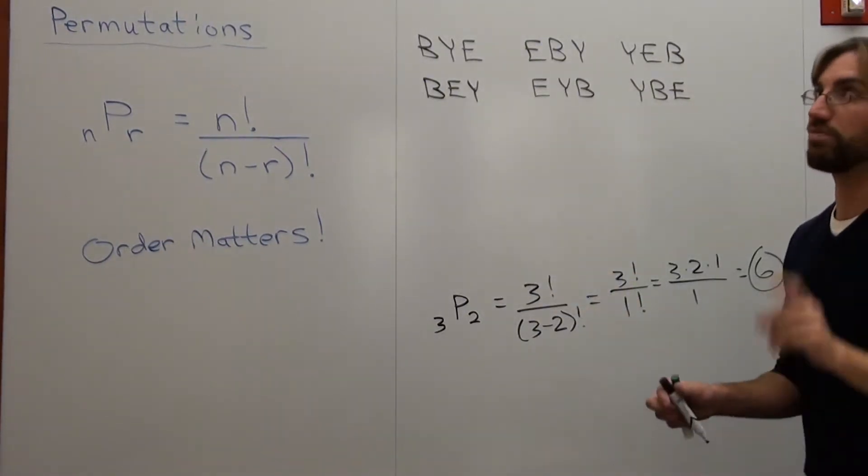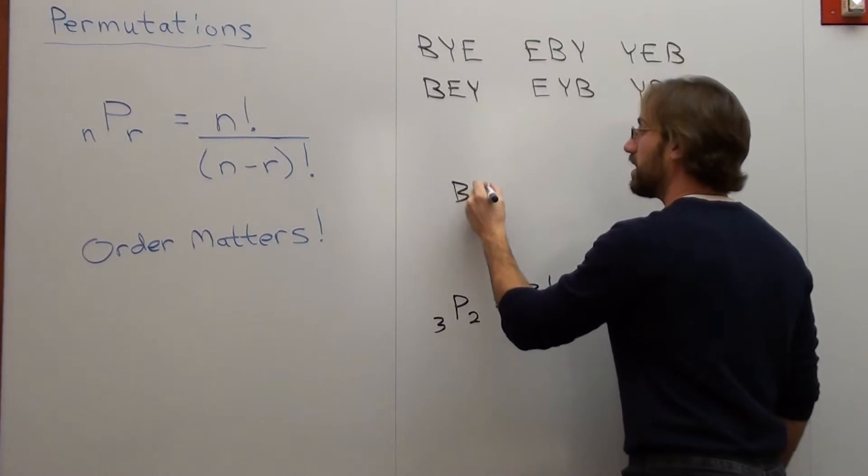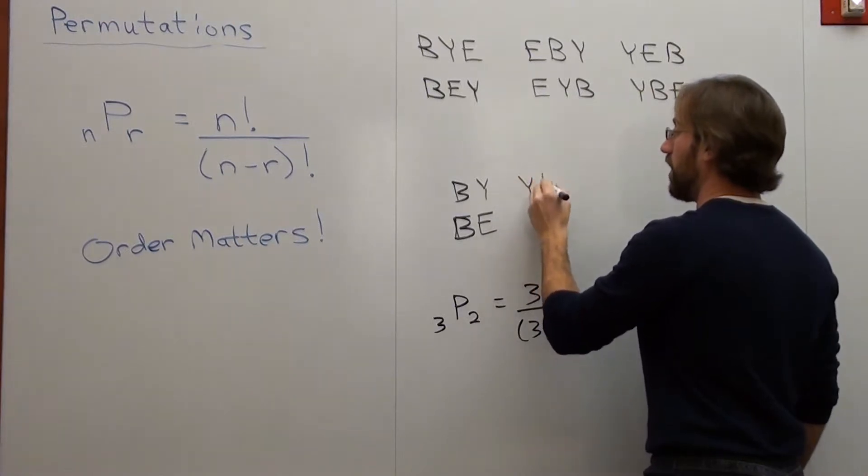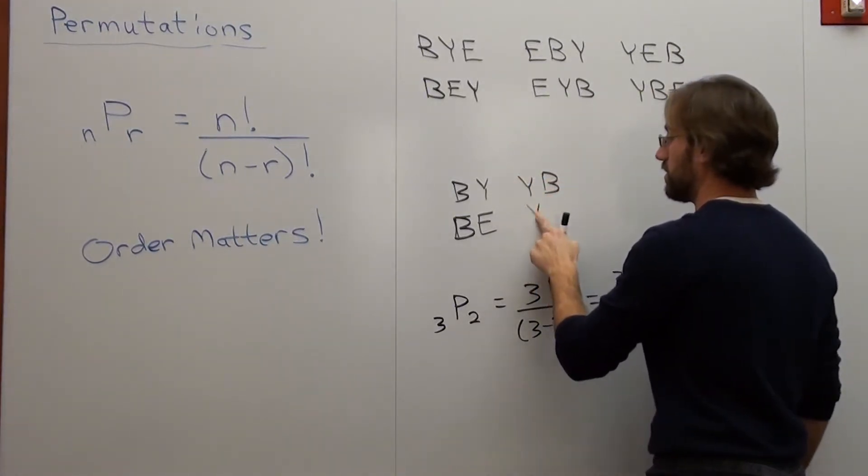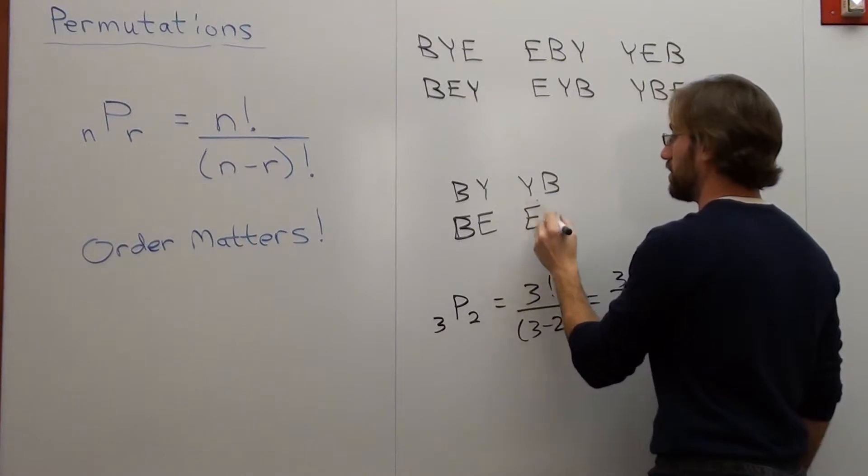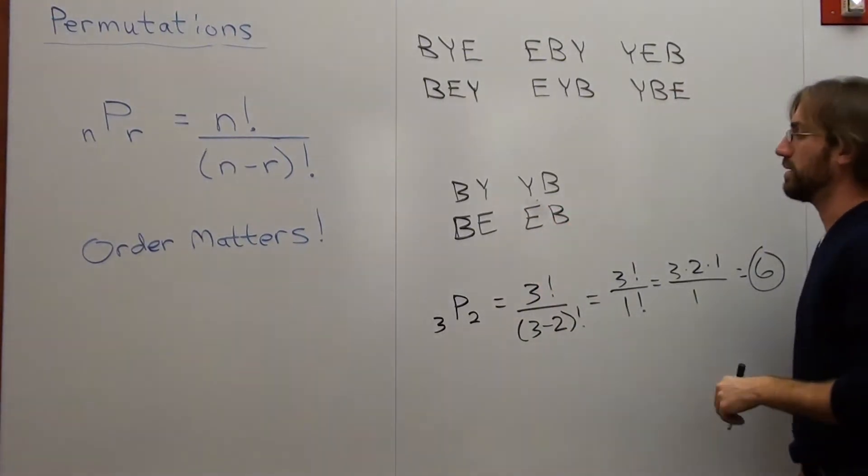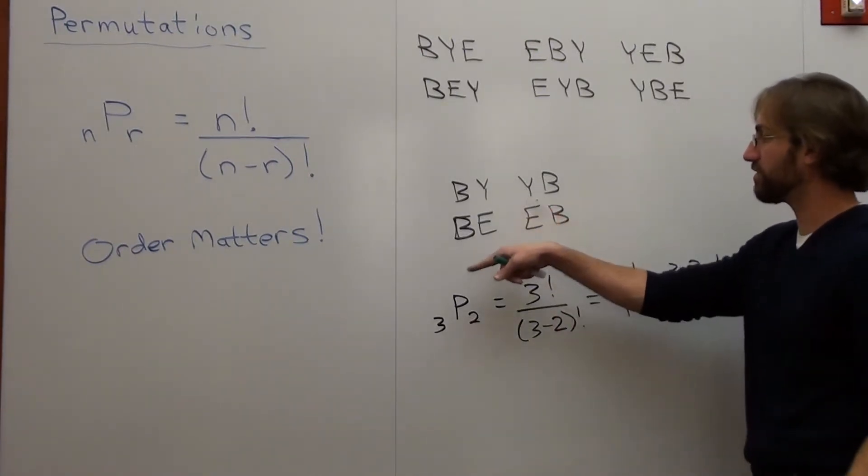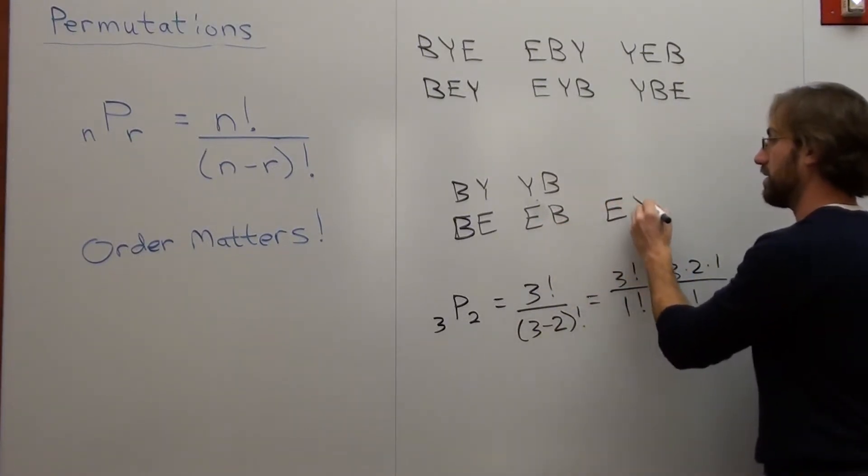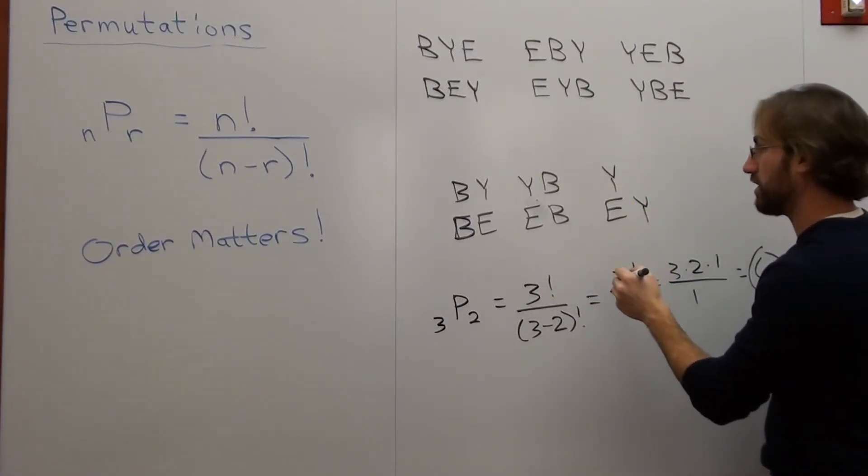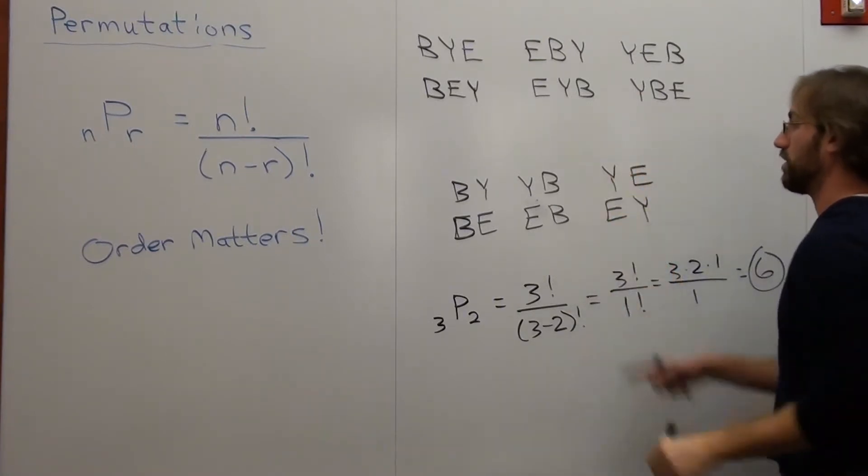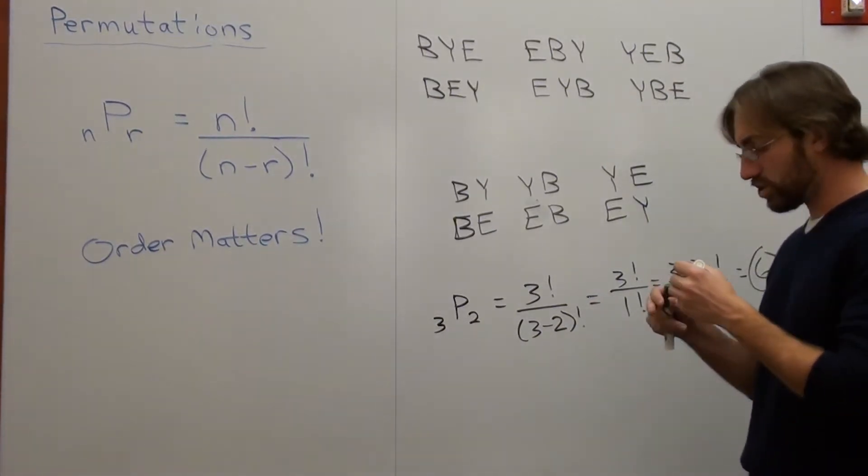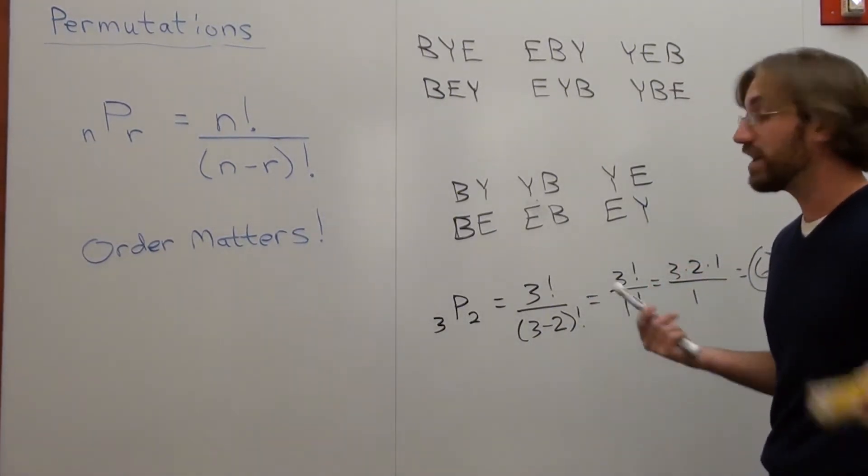Now, you might argue that that's not in fact the case, but it really is the case, and I'll show you why. I'm going to erase this one and show you all the two-letter permutations I can make. I can make BY, BE, YB, EB, I did the B's first, EY, and Y, which one didn't I do? E. So those are all the permutations I can make, six different ones. Pretty cool in its own right.